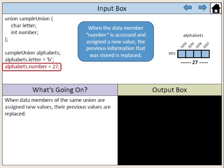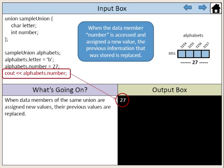When data members of the same union are assigned new values, their previous values are replaced. When the data member number is accessed and assigned a new value, the previous information that was stored is replaced.